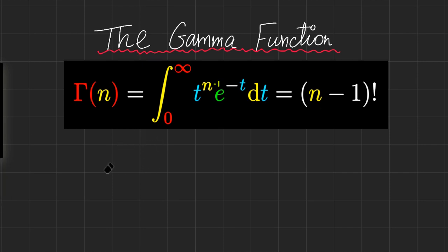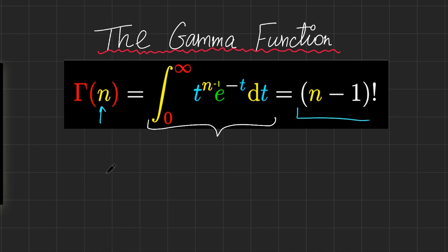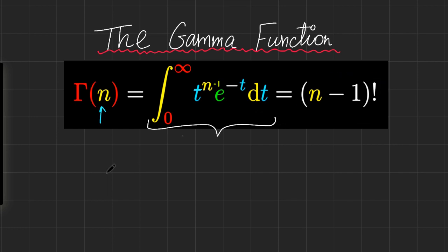The gamma function is defined as the integral from 0 to infinity of t to the n minus 1, e to the minus t. So I plug in an n, put that n minus 1 onto the exponent of t, and evaluate this integral. It just so happens that this equals n minus 1 factorial. Why is that? We're going to go over that later, but what even is the factorial?